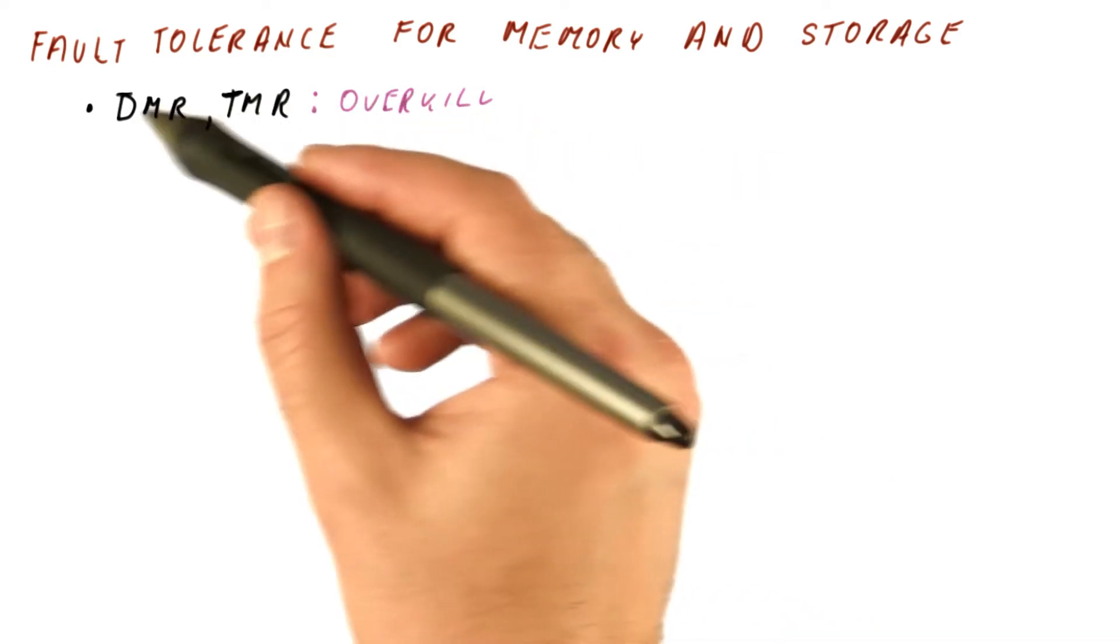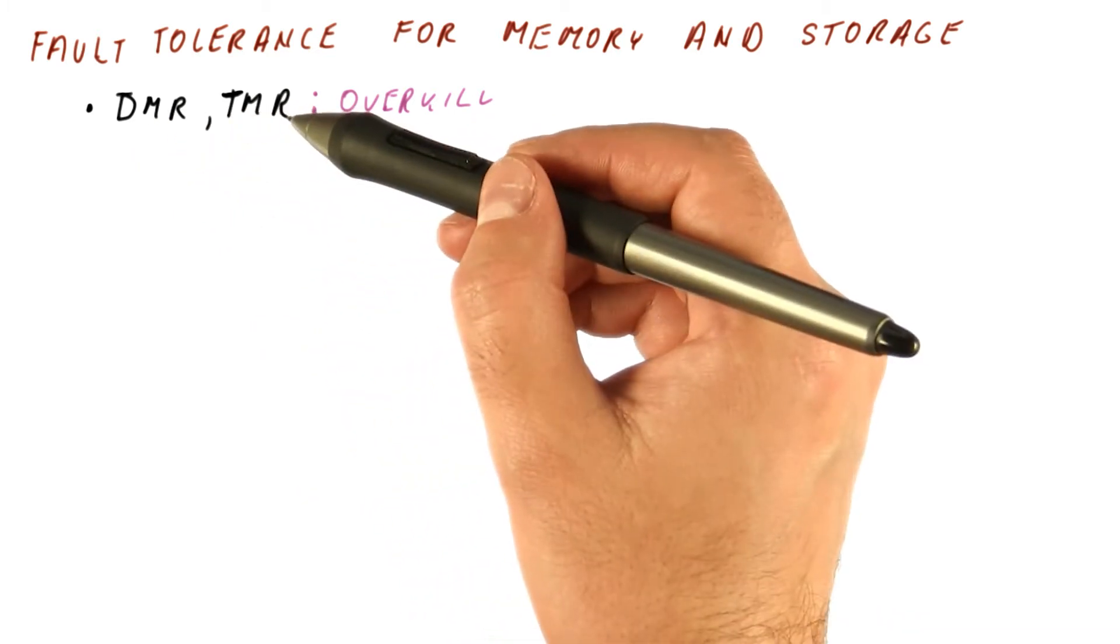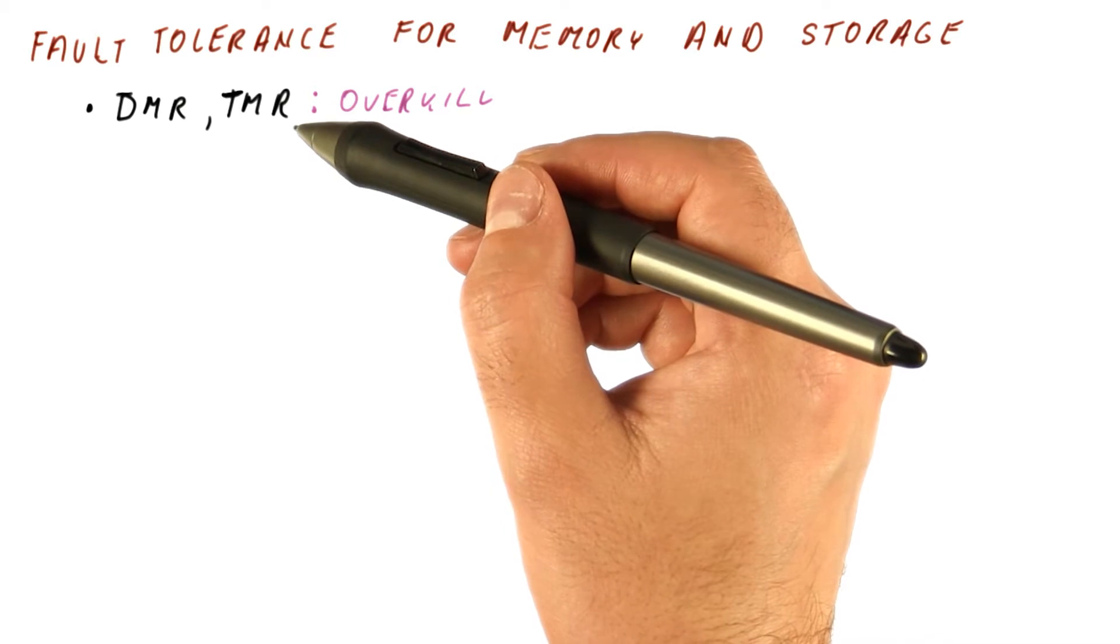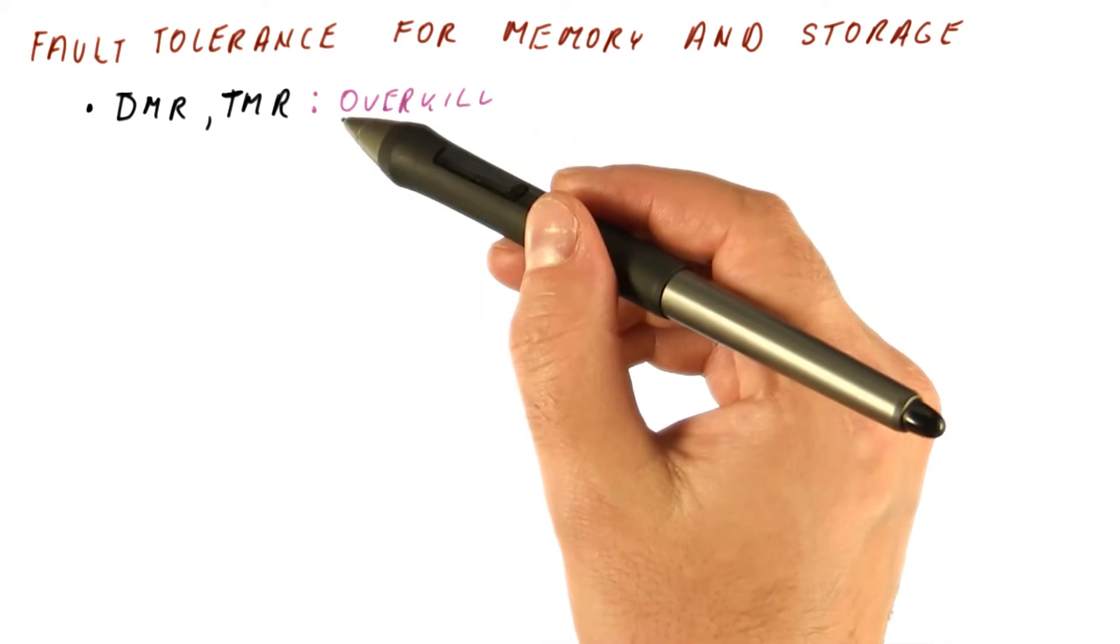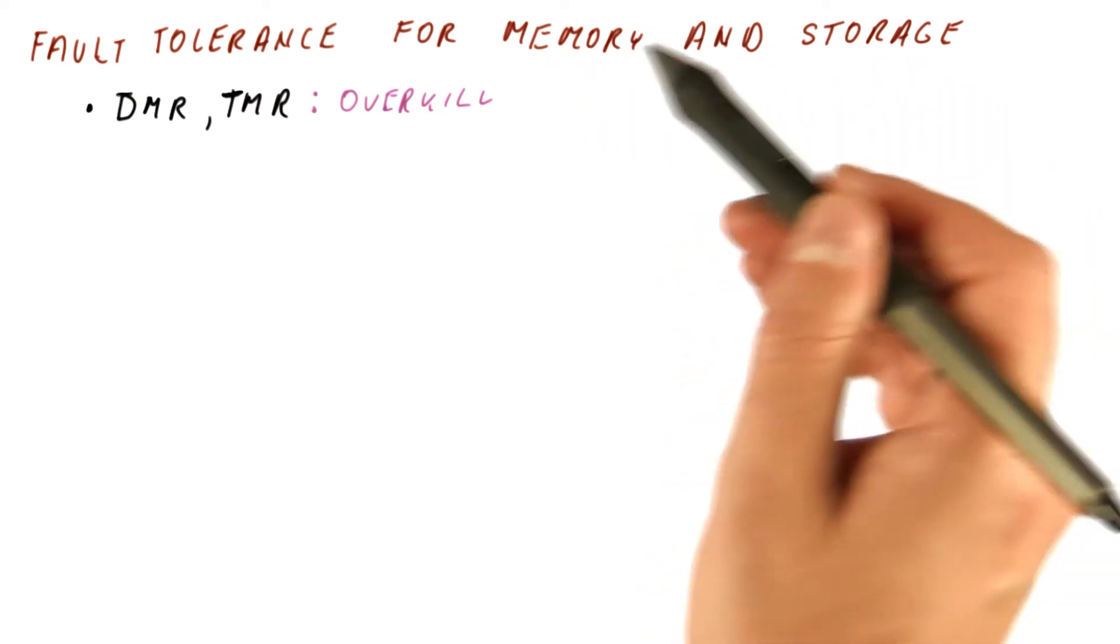We can get better techniques that protect us from similar problems. Dual modular redundancy and triple modular redundancy are typically used for hardware that does the computation, which cannot be protected by some of the less expensive techniques that memory and storage can benefit from.